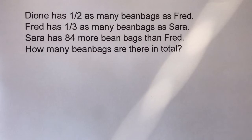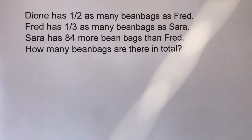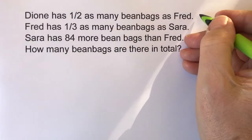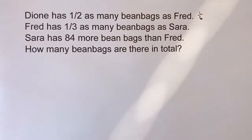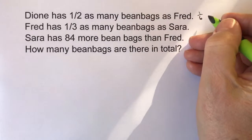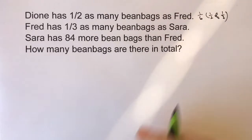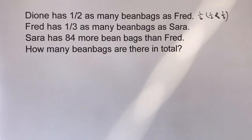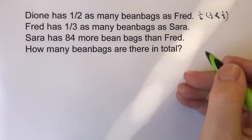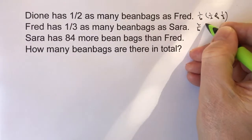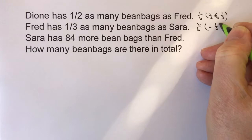The first sentence says Dion has half as many bean bags as Fred. Well, how many bean bags has Fred got? He's got a third. If he's got a third, then it means that Dion must have one sixth, because that is a half of one third. If she's got one sixth, it also means that Fred has two sixths — and as you know, two sixths is exactly the same as one third.